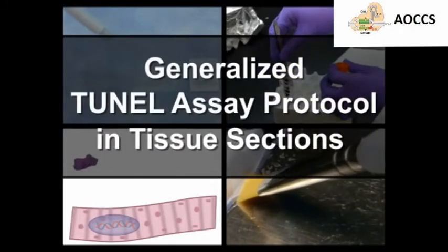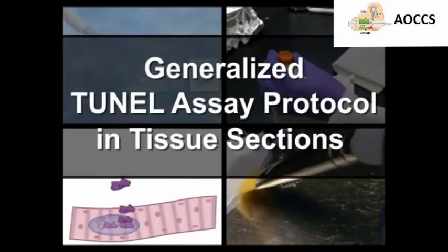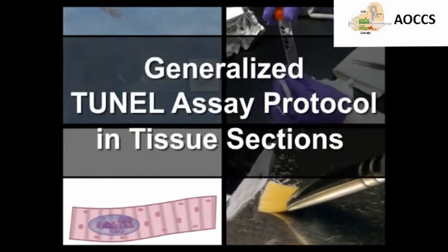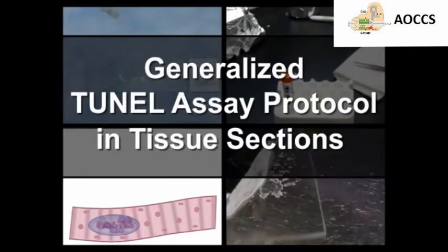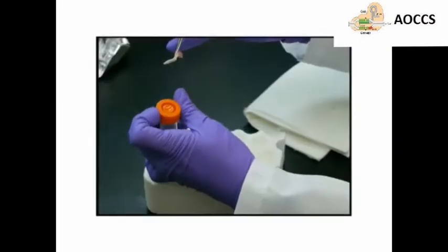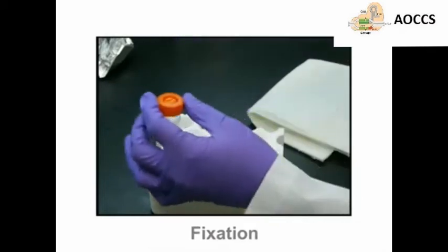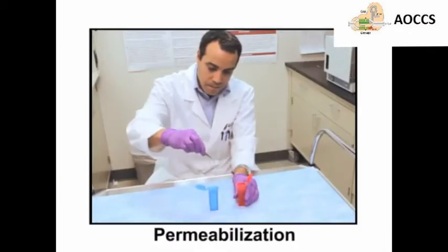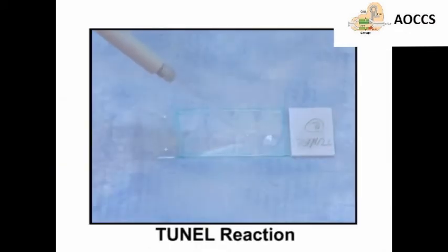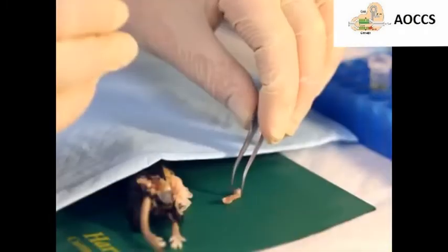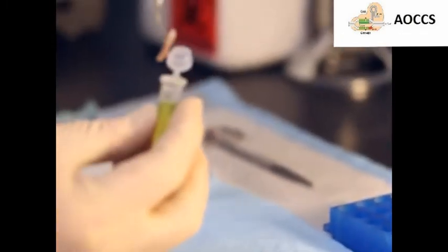Now that you understand the basic principles and concepts behind the TUNEL assay, let's outline a general protocol for performing this technique in tissue sections. The major steps of the TUNEL assay include fixing the tissue of interest, permeabilization of the tissue, adding TUNEL reagents, stopping the TUNEL reaction, and finally the analysis.